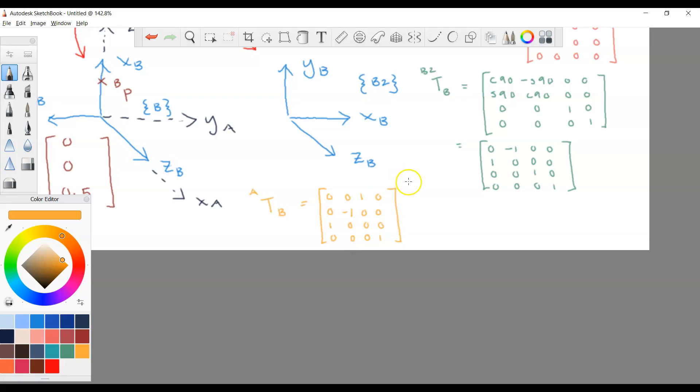And remember, the task is to find pA, so you have to use this equation here. So we have pA tilde equals to TBA multiply p tilde b. So this matrix multiply p tilde b, you should get p tilde a. So what is p tilde b? P tilde b is 0.5, 0, 0, 1. And if you multiply this matrix by this, we will get 0, 0, 0.5, 1. And pA is 0, 0, 0.5, as we have predicted.